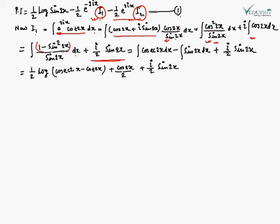Separating terms: ∫ 1/sin 2x dx = ∫ csc 2x dx, and −∫ sin 2x dx, plus i/2 sin 2x. Integrating: (1/2) log|cos 2x| minus (−cos 2x/2) plus the imaginary term. So I1 = (1/2) log cos 2x − cos 2x + i(1/2) sin 2x.